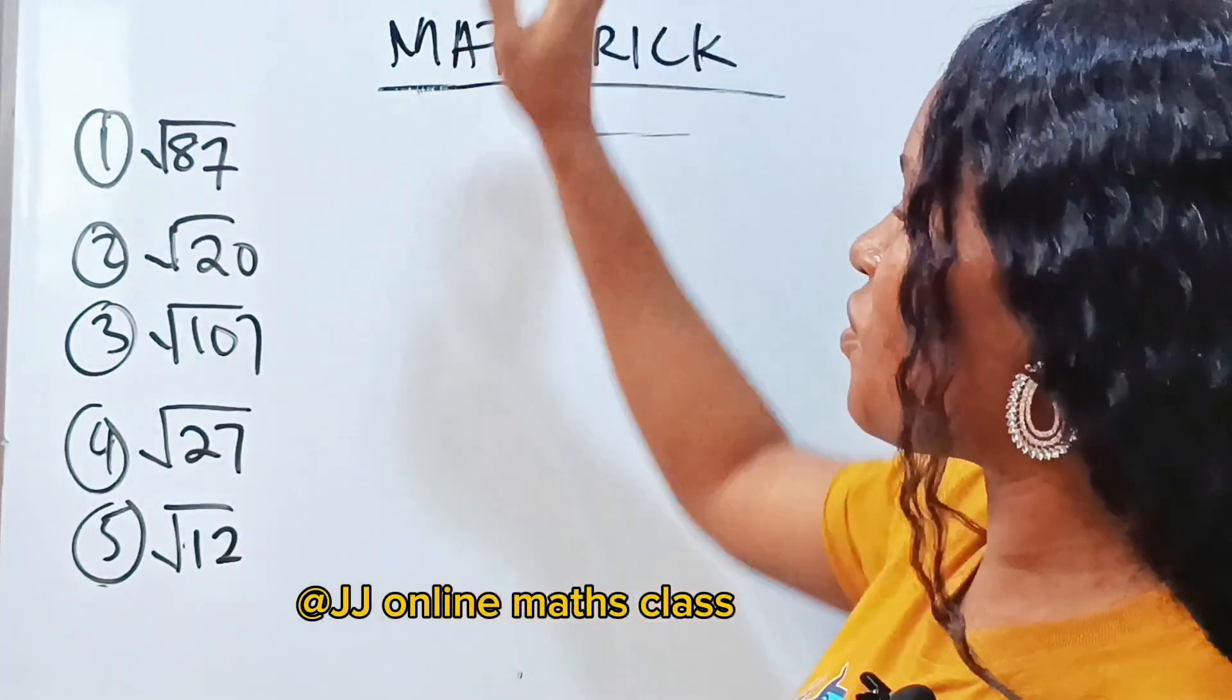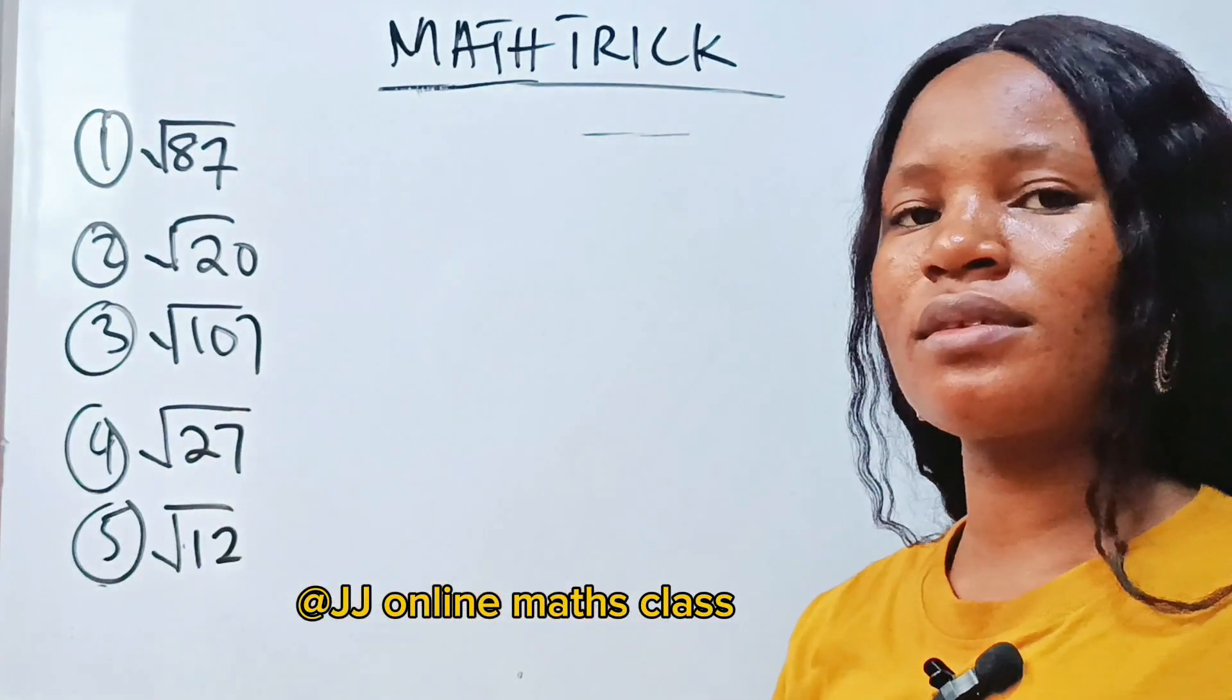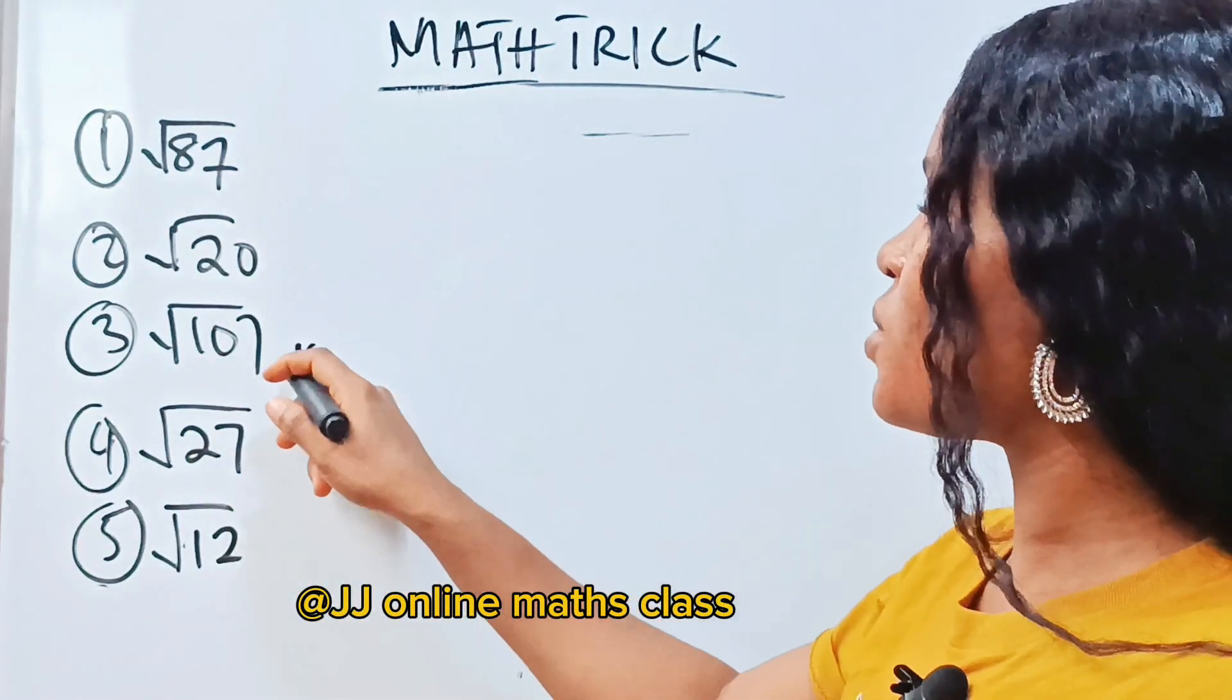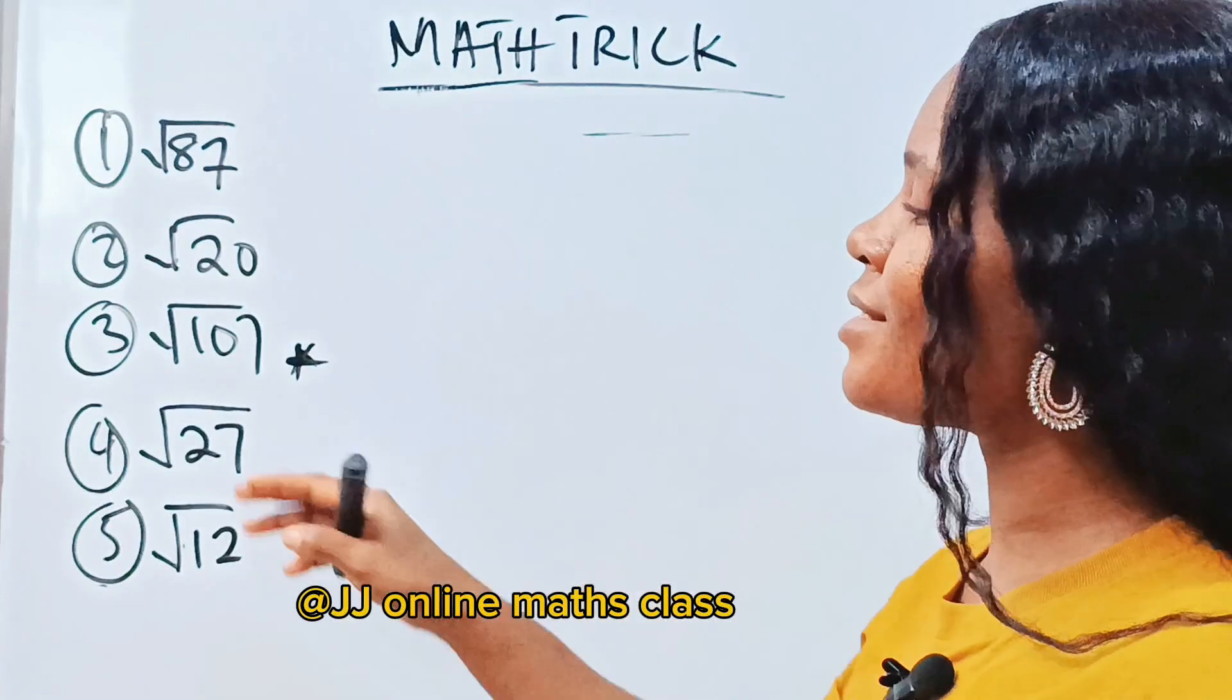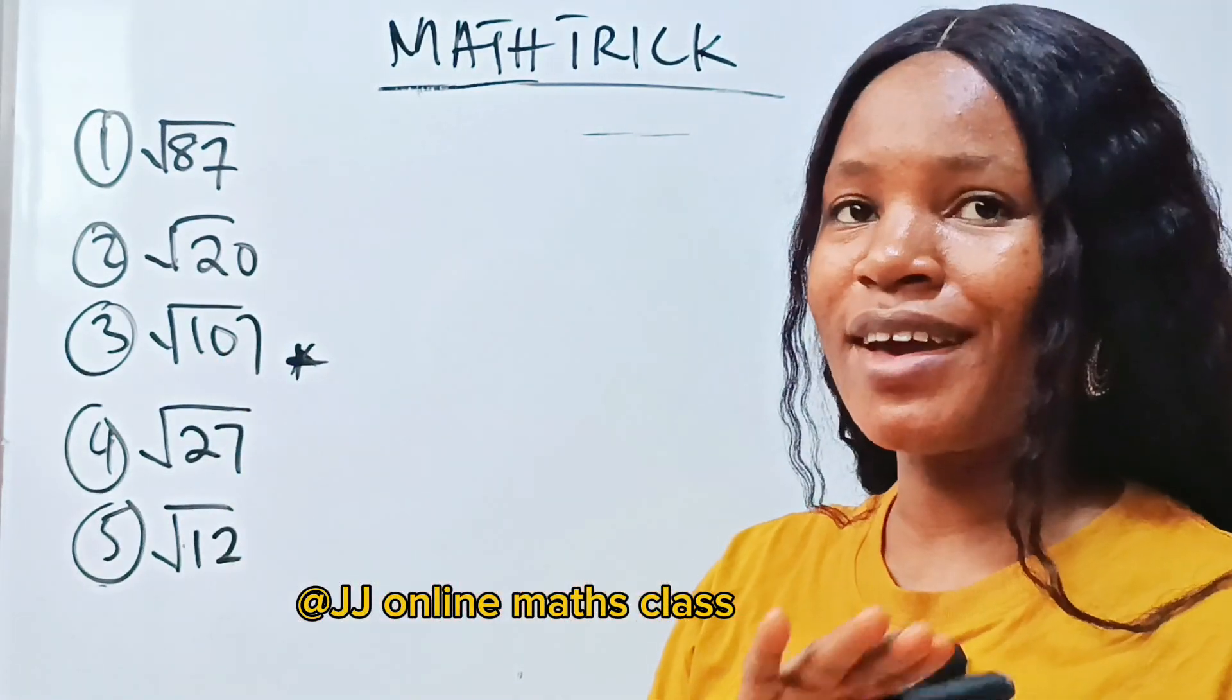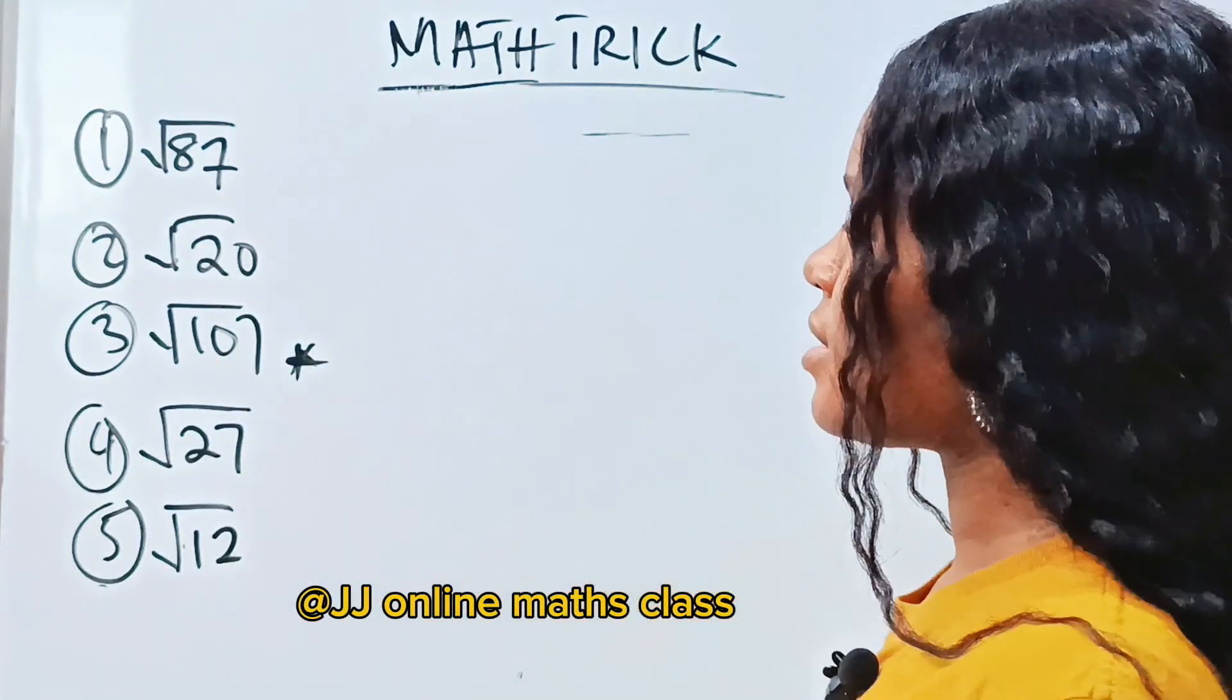Can you do the third one for me? Square root of 107. Just do it and drop it in the comment section and ensure that you don't use your calculator. Do not use your calculator.